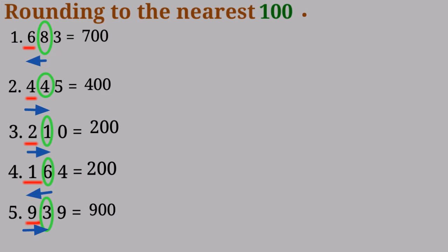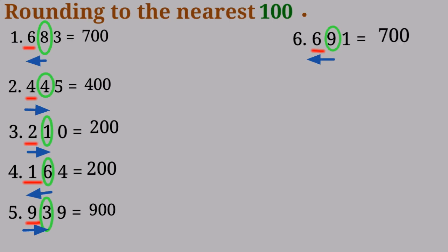Number 6: 691. I underline 6 because it's in the hundreds place, and I'm looking at number 9 in the tens place. 9 is a rounding up number, so it has the power to push 6 up. So 9 and 1 turn to 0, and it becomes 700.